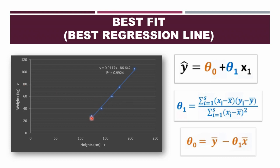Over here I can see that this first point is not exactly lying on the line, neither is the second point. The third point is somewhat on the line, and so is the fourth and fifth. When data points do not lie exactly on the regression line, they create residuals, which we have learned about in my previous video — go check it out if you don't know what a residual or error is.